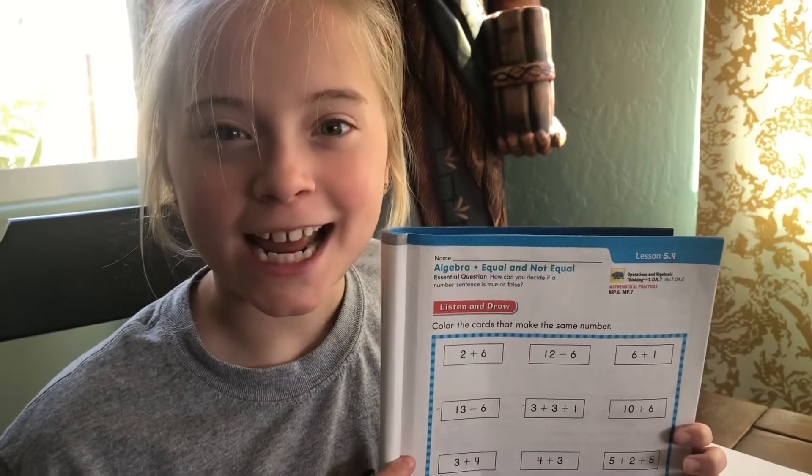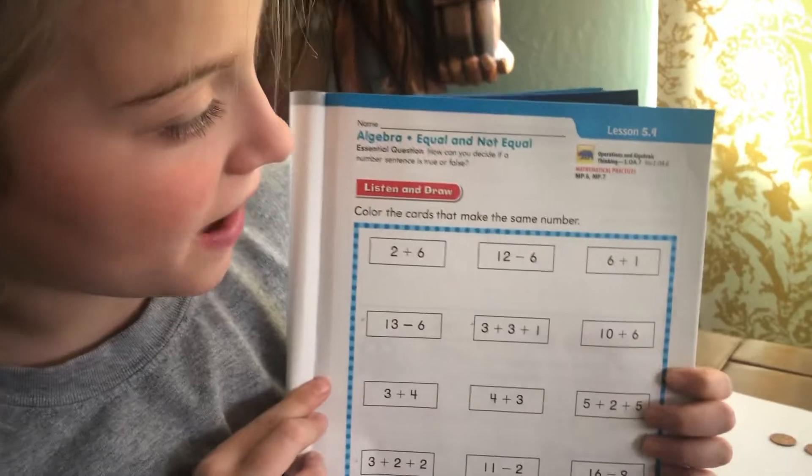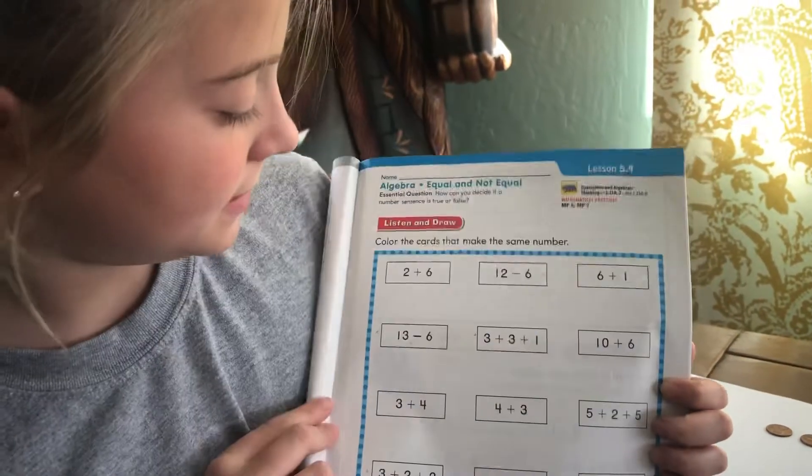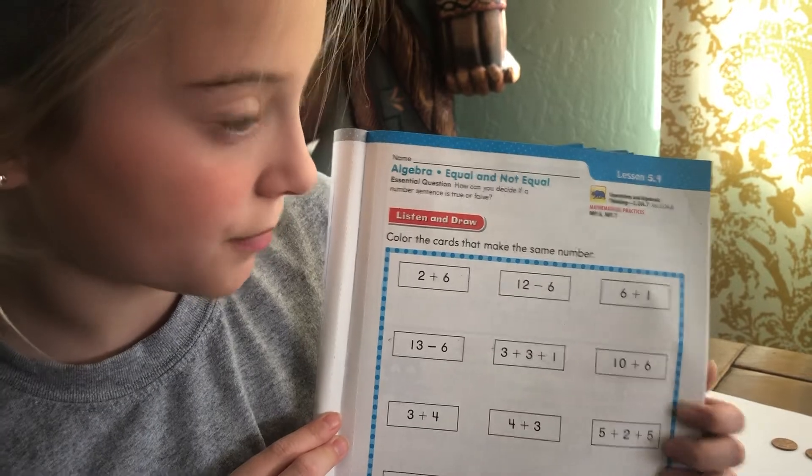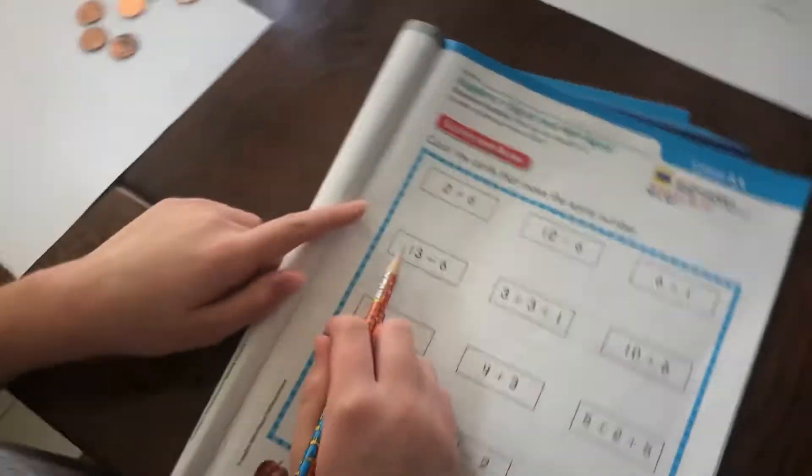Hi boys and girls, it's Gwen and today we are going to be doing lesson 5.9. It says color the cards that make the same number. I'm not going to do all of these, I'm just going to give you an example because there's a lot. So the first one I'm going to do is this one right here.